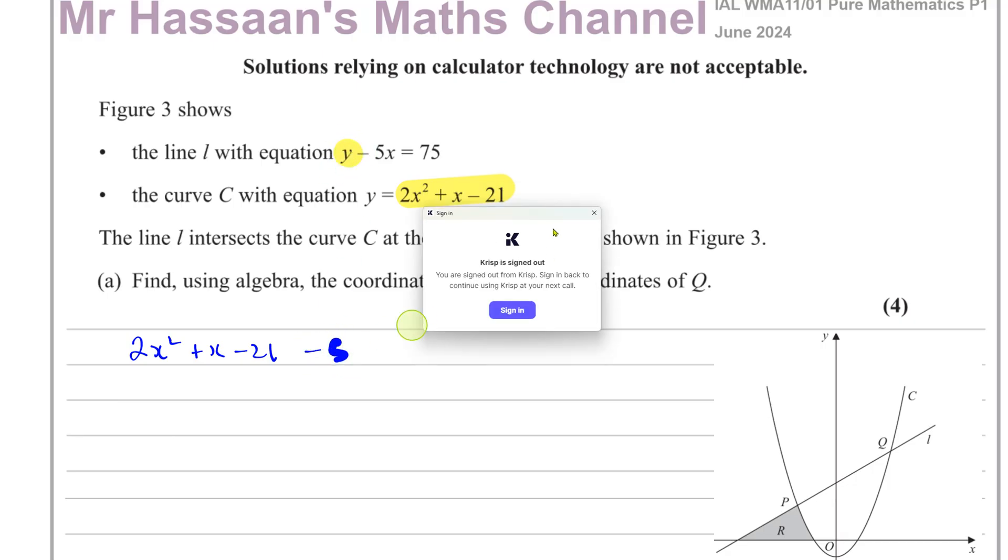So that's taking the place of the y. Then I've got minus 5x and then equals 75. So I've replaced this y with all of this. That's y minus 5x equals 75. Now this equation is a quadratic which will give me the solutions, which will help me find where they intersect. So I've got 2x squared, x minus 5x is minus 4x minus 21 minus 75, that's minus 96 equals 0.